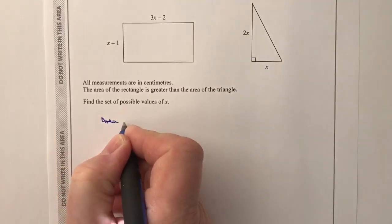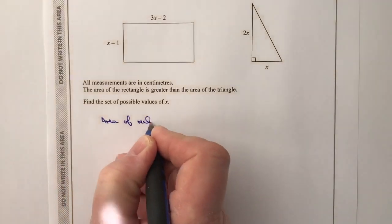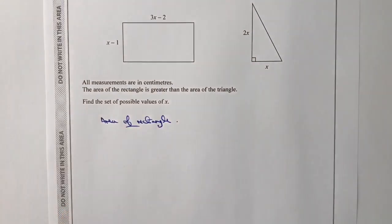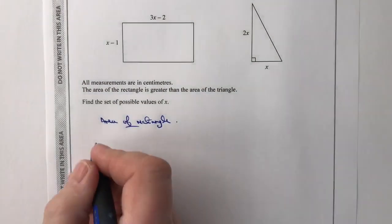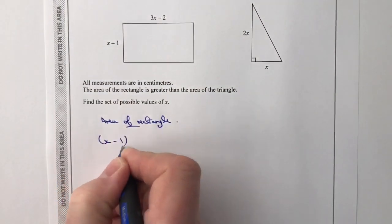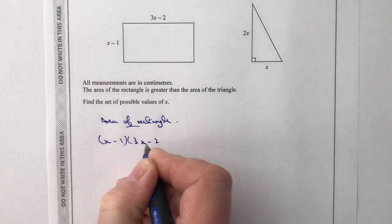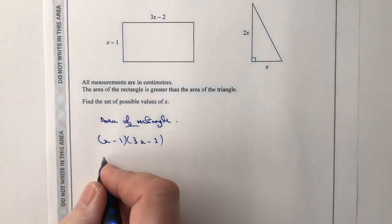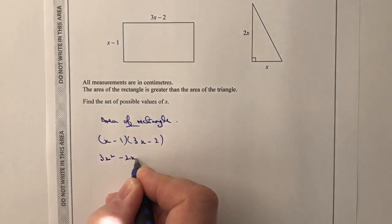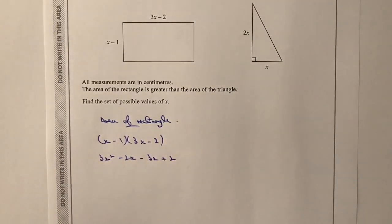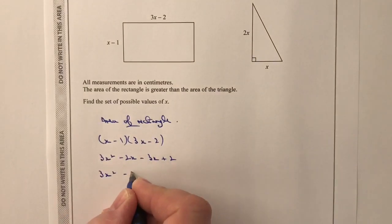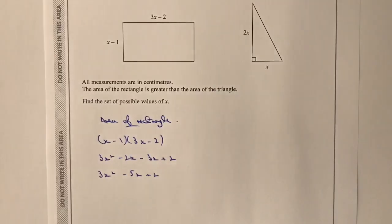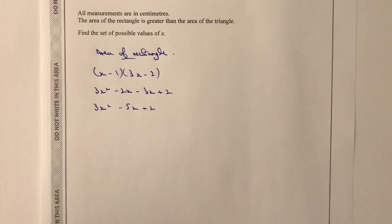Let's have a look at how we're going to work that out. Well, we've got the area of the rectangle. So, area of rectangle. So the area of the rectangle is going to be X minus 1 times 3X minus 2. So if I now work that through, I'm going to get X times 3X is 3X squared minus 2X minus 3X plus 2. So just to tidy that up a little bit, I'm going to get 3X squared minus 5X plus 2. So that's the area of the rectangle.